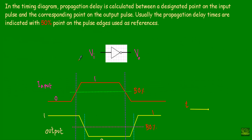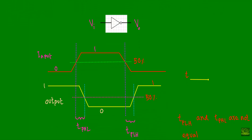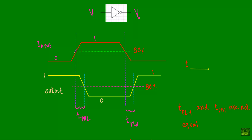We can explain propagation delay using a timing diagram. Consider this simple inverter gate with finite time delay. A time-varying signal is applied at the input terminal of this inverter gate.